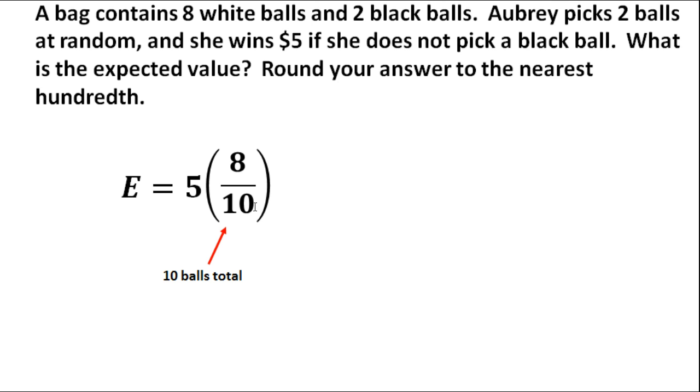The second one, now how many balls are left in there? Well, there are no longer 8 balls in there. There are now 7 balls that are white and a total of 9 balls in there. There are only 9 left. She had 10, but then she just chose this one. So now she has 7 white balls and 9 total. So we're going to multiply that by the probability of pulling a white one out on the second one, which would be 7 ninths.